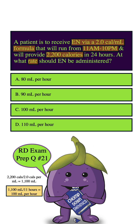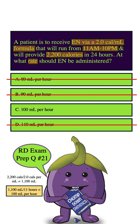Looking at our answer choices, we can eliminate A, B, and D because they are not 100, but C is. Therefore, C, 100 ml per hour, is the correct answer.